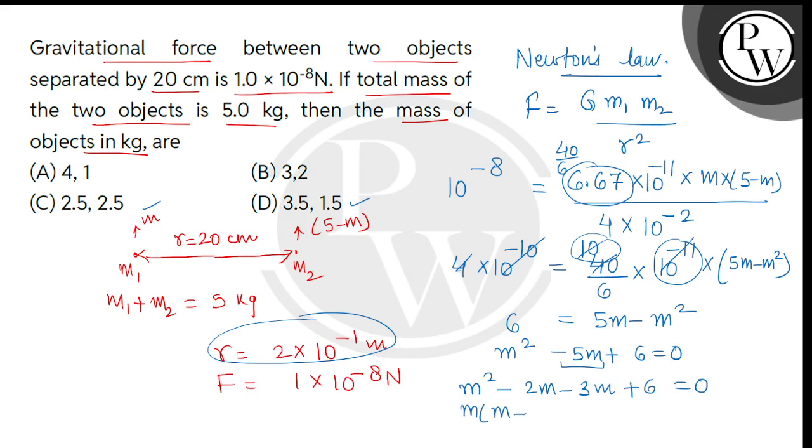M is common, so m minus 2. Then minus 3 is common, so m minus 2 equal to 0. So we will get here two factors: m minus 2 and m minus 3 equal to 0. We will get 2 values. One value will be 2 kg and another value will be 3 kg.